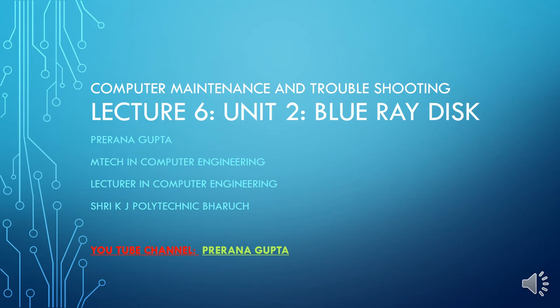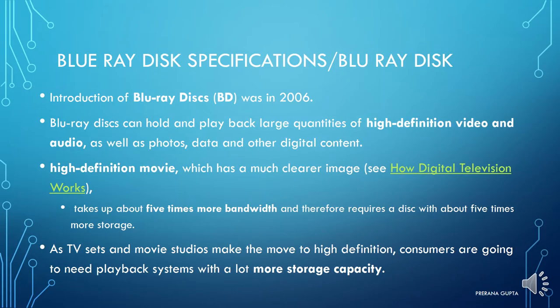Welcome. This is lecture number six of unit 2, and the last lecture of unit 2. The topic is Blu-ray disc. The spelling can be B-L-U-E or B-L-U — both refer to the Blu-ray disc, also known as BD.